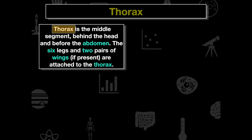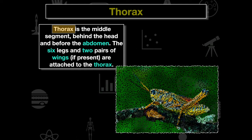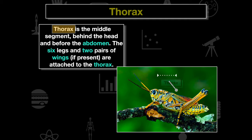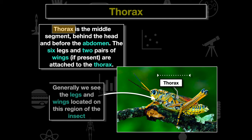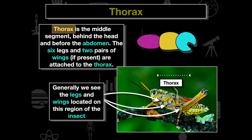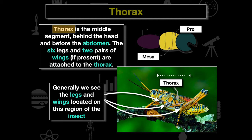The thorax is the middle section of the organism, behind the head and before the abdomen. This is generally where we see the legs and wings, if present. Looking at this grasshopper, we can see all six legs attached to the thorax. The thorax can be broken into three separate parts: the pro-, meso-, and metathorax. Legs and wing structures grow from specific parts of the thorax.